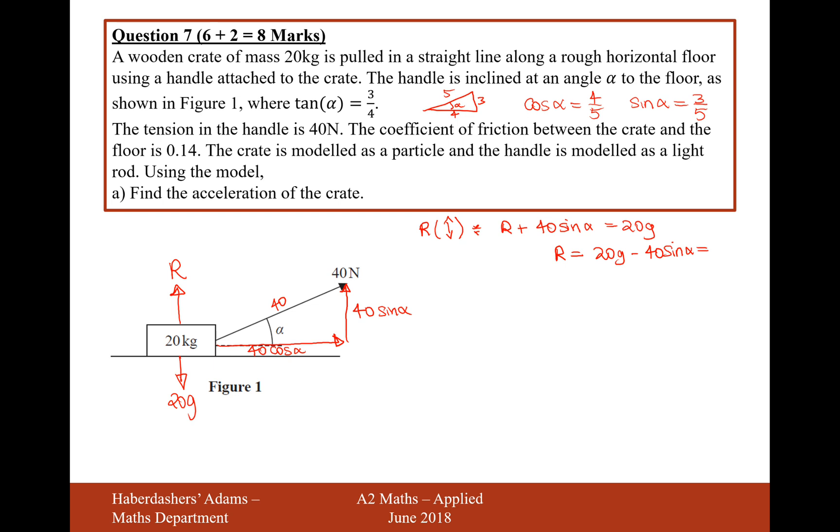Now the particle's not moving up and down, so the forces upwards must match up with the forces downwards. So therefore what we now know is that R is equal to 20g minus 40 sin α. And if we work that out using g as 9.8, 20 times 9.8 minus 40 times 3 fifths, that's going to give us 172.